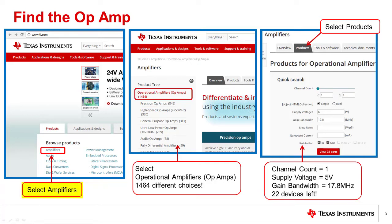To get to this tool, click on the Amplifiers Products on TI.com. In the Amplifiers section, click on Operational Amplifiers, Op Amps. And from here, select the Products tab and use the Quick Search feature.